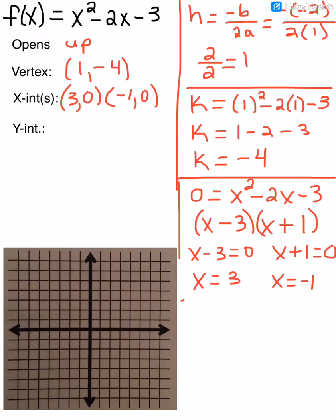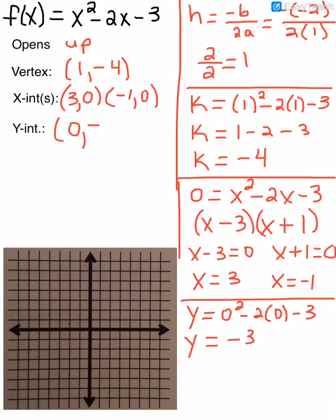And then my y-intercept — I find it by plugging in 0 for x. So if I plug in 0 for x in both spots, all that turns to 0 and all that's left is negative 3. So my y-intercept is 0, negative 3. Let me plot the points I have: my vertex is at 1, negative 4; my y-intercept is at 0, negative 3; and my x-intercepts are at 3 and negative 1. Remember that the parabola is symmetric, so since I have that y-intercept at 0, negative 3, I can also plot another point the same distance from the axis of symmetry. That gives me 5 points to graph my parabola.